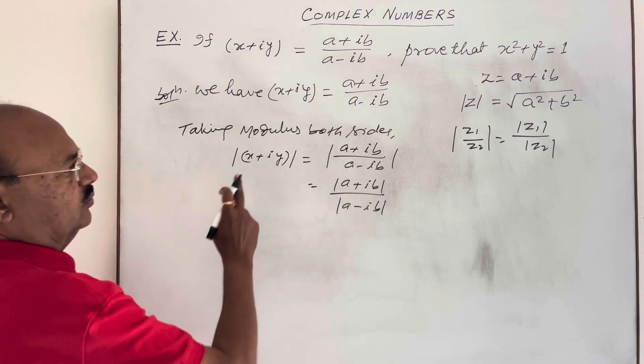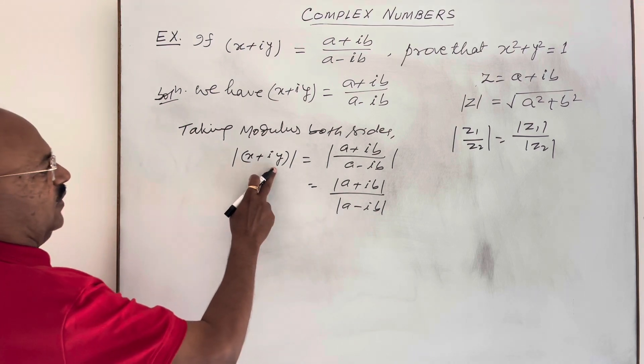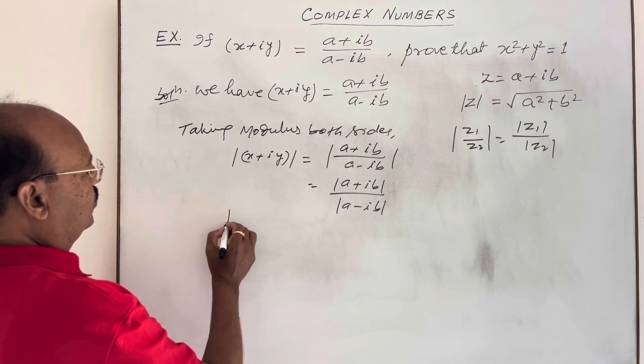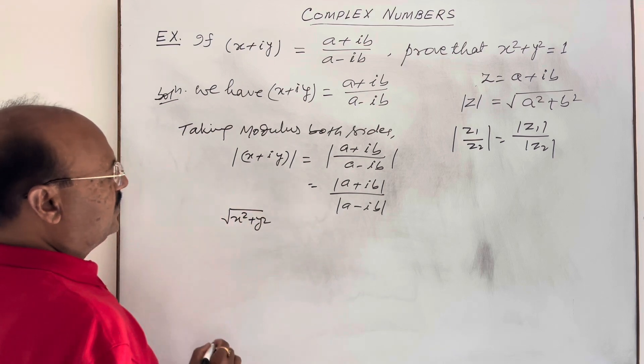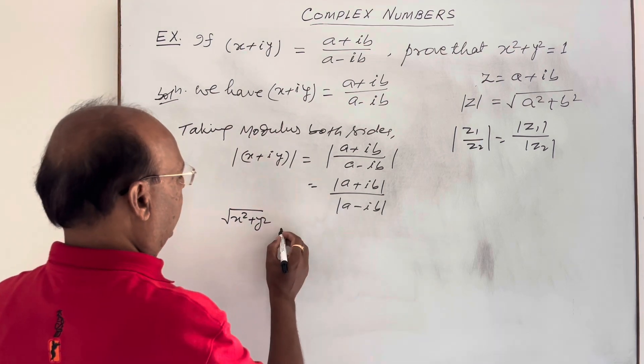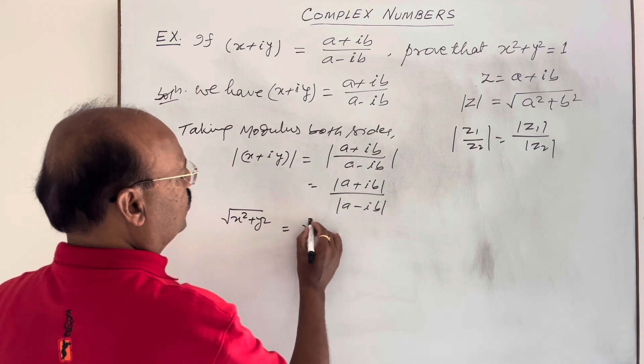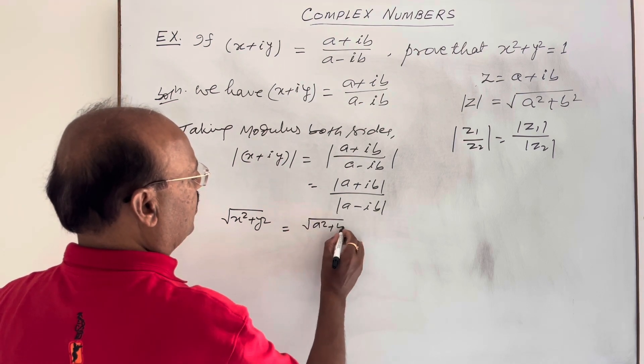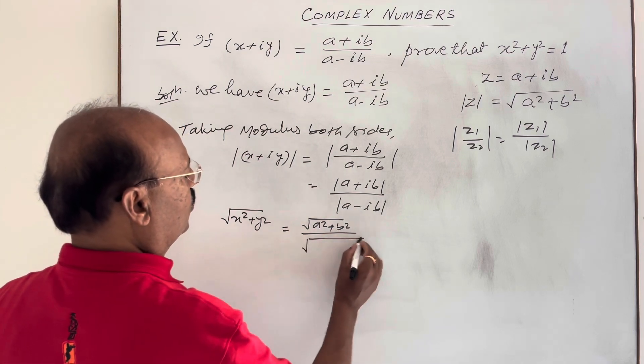In left hand side, by the definition of modulus of complex number, mod of x plus iy is equal to root over x square plus y square. And in right hand side, modulus of a plus ib is root over a square plus b square, and in denominator root over a square plus b square.